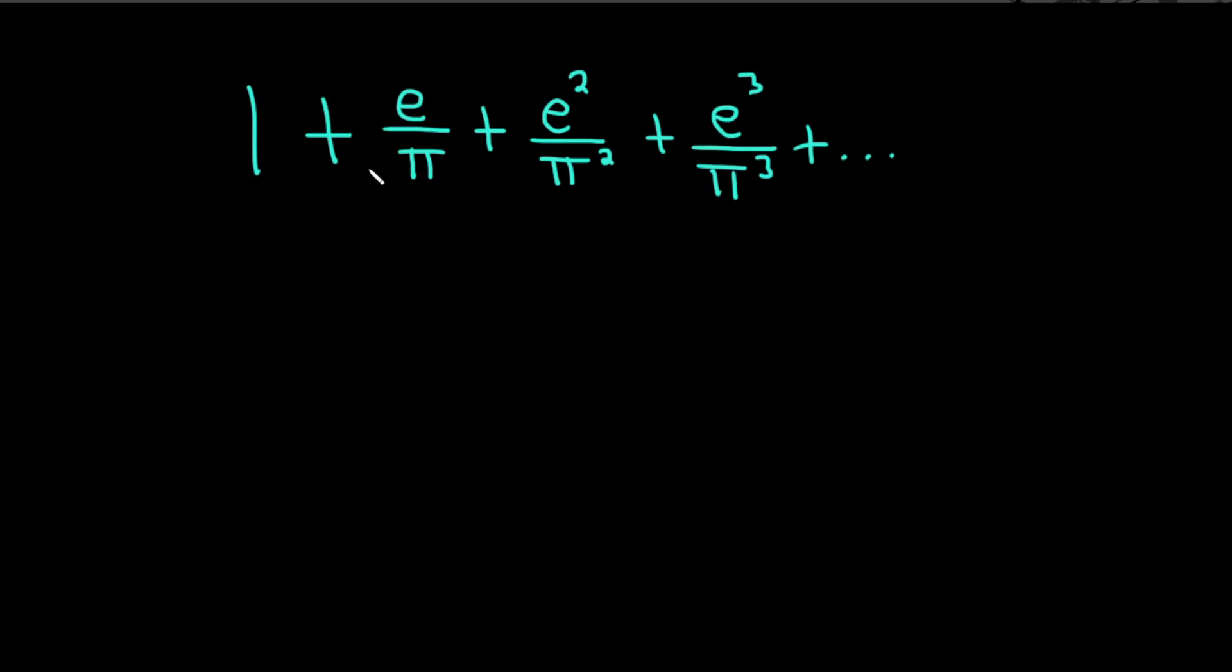Hi, we're going to try to find the sum of this infinite series. We have 1 plus e over pi plus e squared over pi squared plus e cubed over pi cubed plus dot dot dot. So this looks like it's a geometric series.